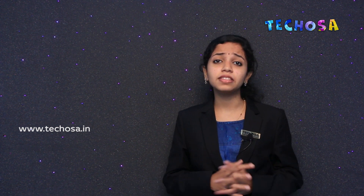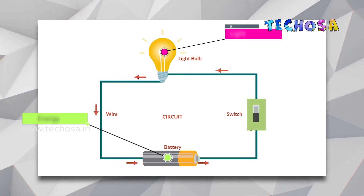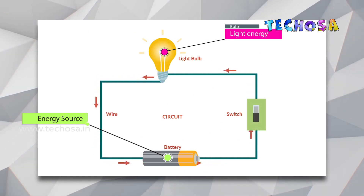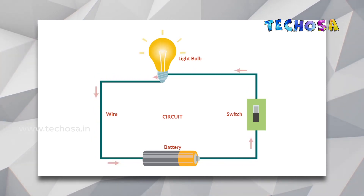Similarly, current is measured by ampere or amps. The battery is supplying a voltage of 1.5 volts. The current starts flowing in the circuit because there is a potential difference between the positive and negative terminals. The flowing electrons, or current, will get inside the bulb and will convert some of the electrical energy to light energy. The remaining electrons will go to the negative terminal of the battery.